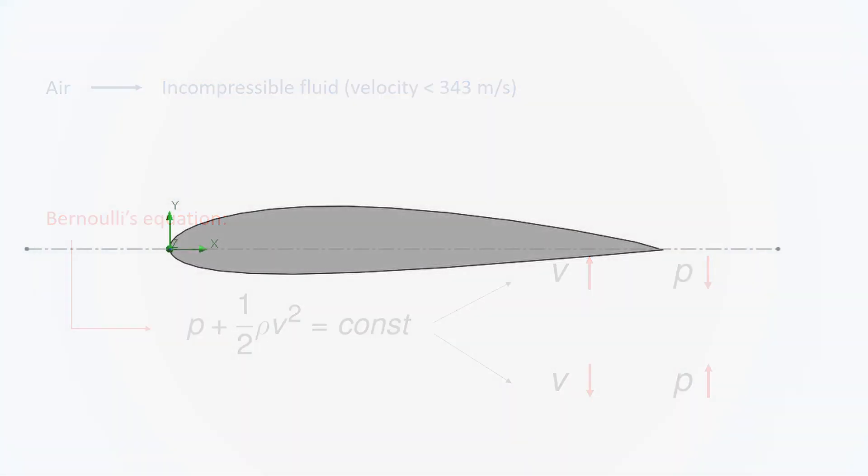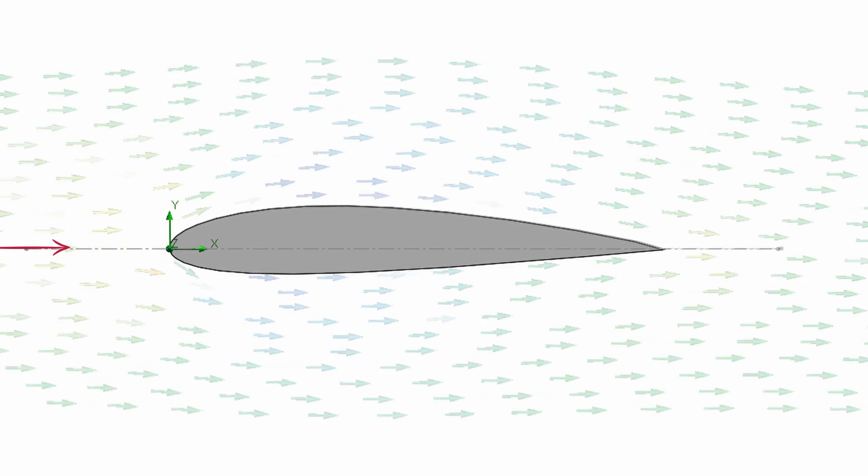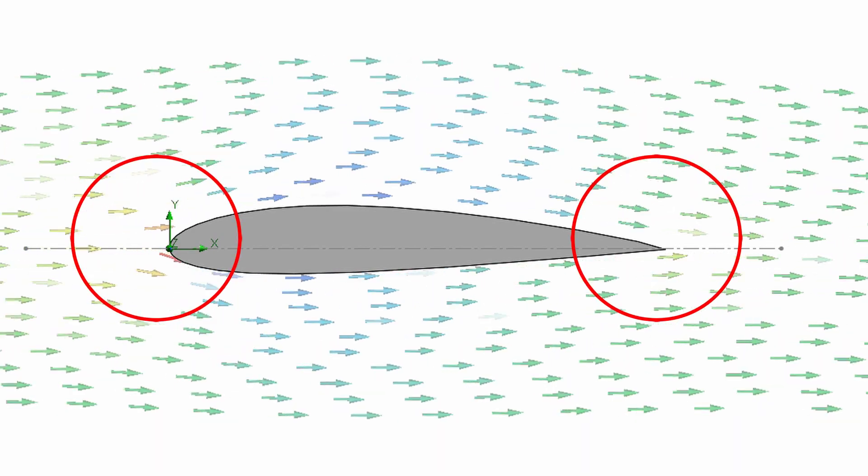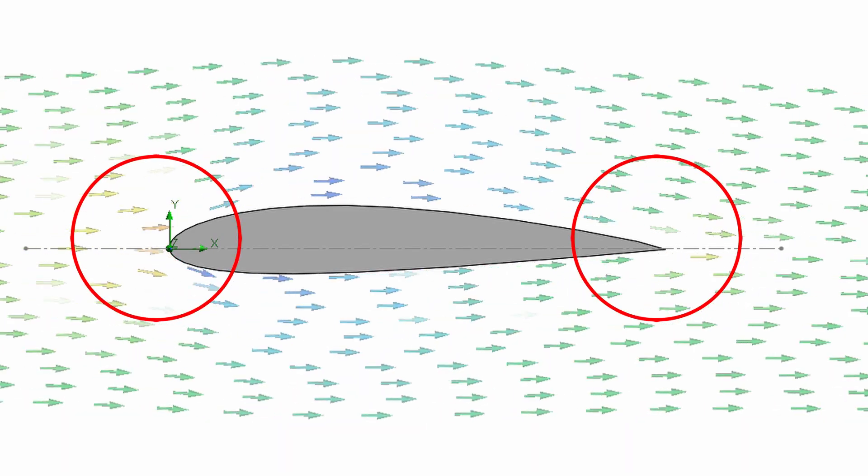Now, considering an airfoil and a horizontal air flow coming from this direction, we can observe that in these two areas the velocity drops, and so the pressure raises.